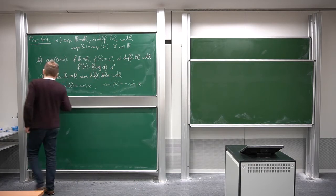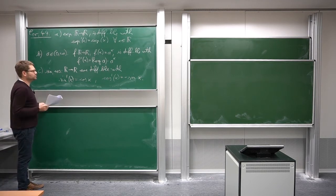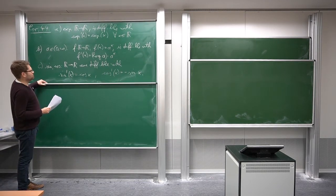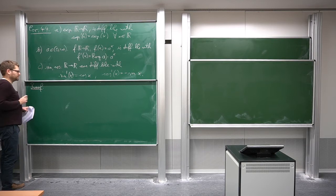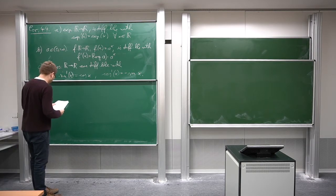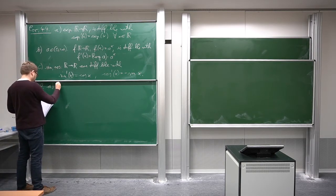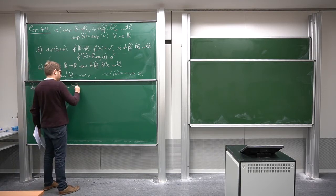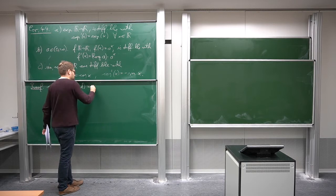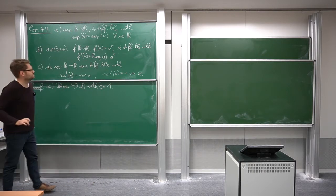This last result is probably familiar to almost everyone from high school, at least everyone who treated derivatives there. So let's prove this in our framework with our new definition of sine and cosine via the exponential function. The first part is clear — it is a special case of theorem 4.3d, where we simply put the constant c equal to 1.